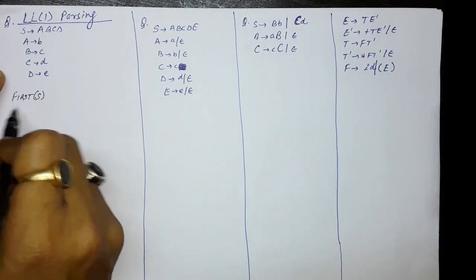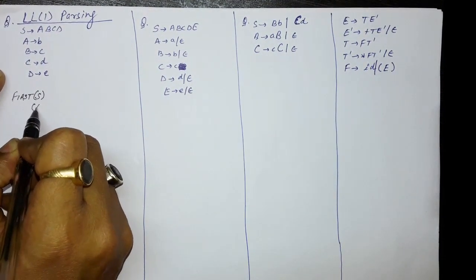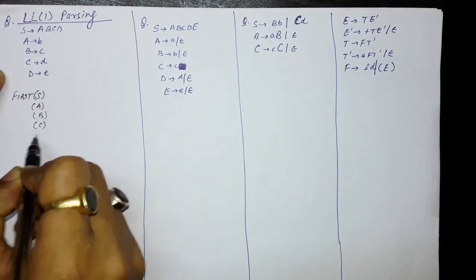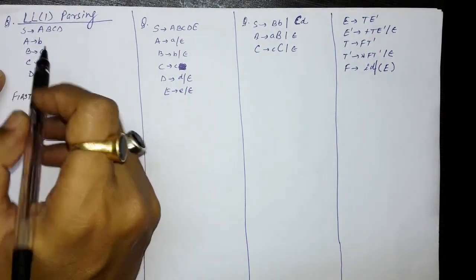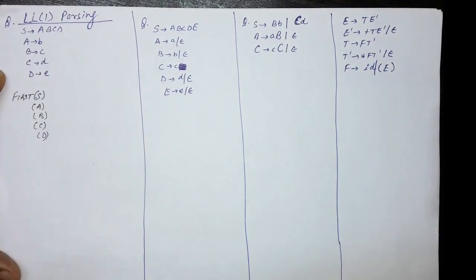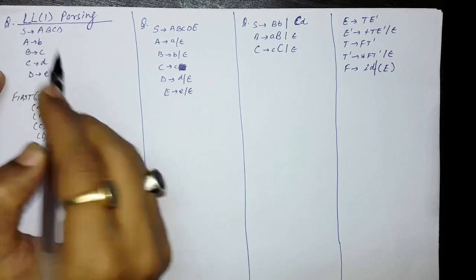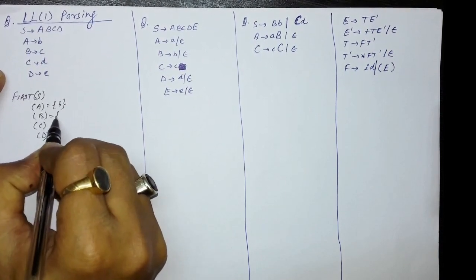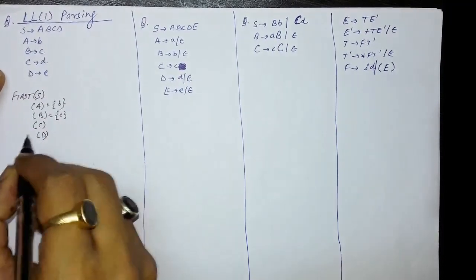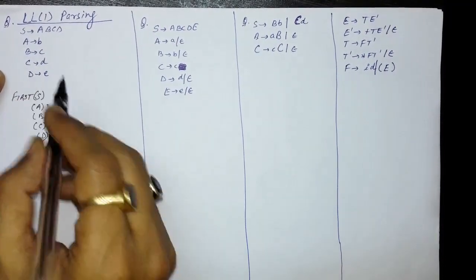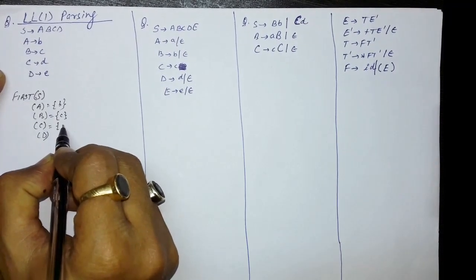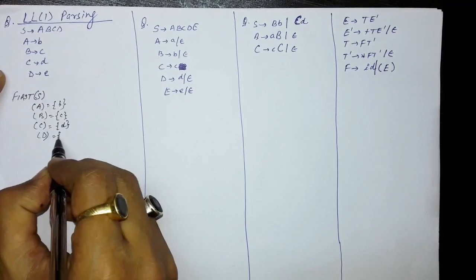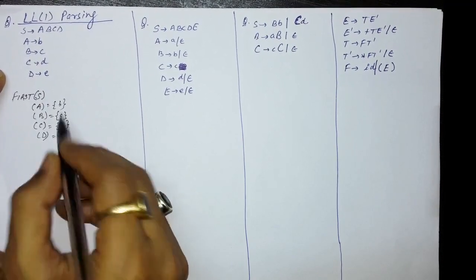For finding out the FIRST of various symbols, you should find out the FIRST of the symbol which is easier to find. For example, FIRST of A is directly small b — when deriving a string with capital A, you will find small b. Similarly, when deriving with capital B you will find small c, when deriving with capital C you will find small d, and when deriving with capital D you will find small e.